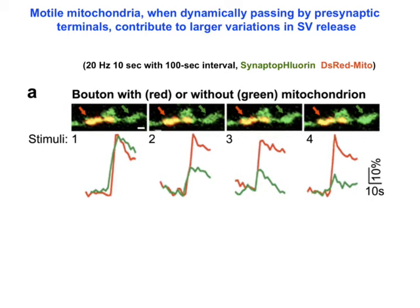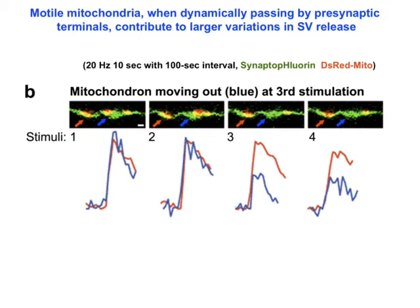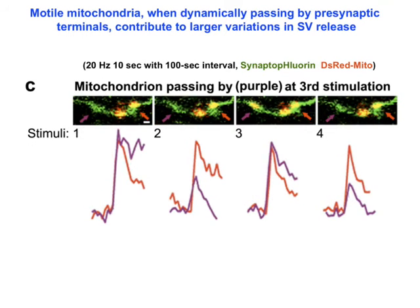Changes in fluorescence intensity reflect the relative strength of synaptic vesicle release and recycling. During chains of stimulation, synaptic vesicle release remained stable at terminals with stationary mitochondria, while synaptic vesicle release was reduced starting at the second chain at boutons lacking mitochondria. Interestingly, motile mitochondria impact synaptic vesicle release. Release was quickly reduced when mitochondria moved out of terminals, and mitochondria passing by boutons enhanced synaptic vesicle release.